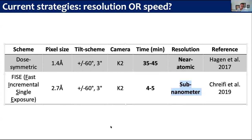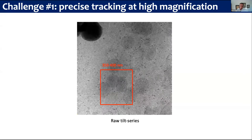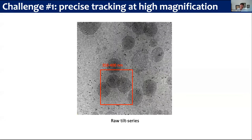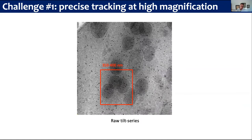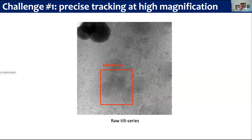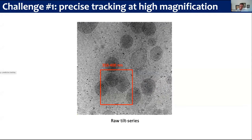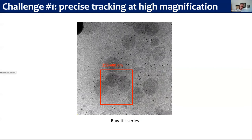The whole point here is: can we actually get both things? Can we actually collect data quicker but also get the higher resolution? In order to do that, there are two problems we need to solve. The first problem is because we're imaging at very high magnification, the tracking becomes very important because we need to make sure that our sample, or the region of interest, stays within the field of view across all tilts. When you have a field of view of around 400 nanometers, as shown in this red square here, obviously your tracking needs to be very, very precise.